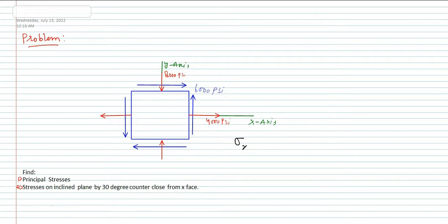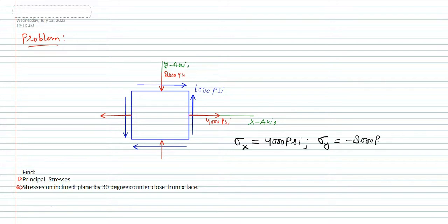We can write Sigma X equal to 4000 psi, positive, because it is in tension — it is away from the plane. Sigma Y is equal to minus 8000 psi, because this 8000 is acting towards the plane, compressing it, so it is negative. The shear stress tau XY is equal to 6000 psi.